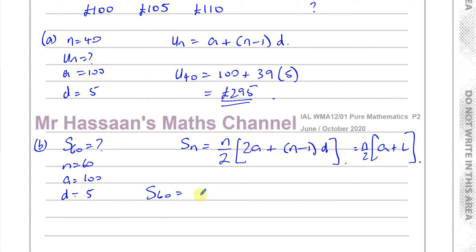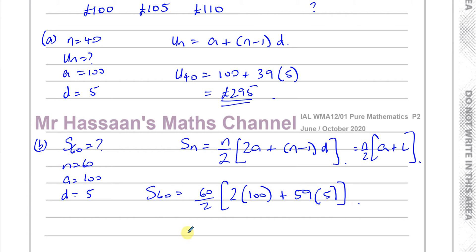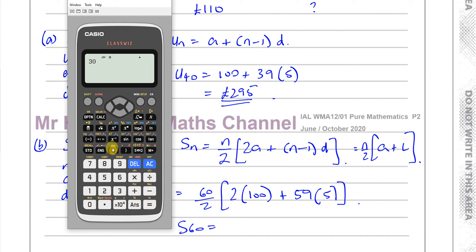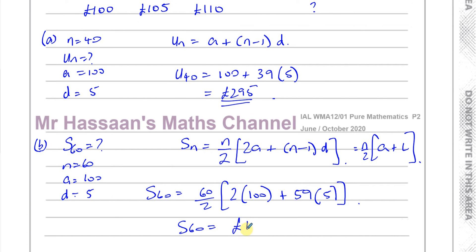The sum of the first 60 terms is N over 2, so it's 60 over 2, which is 30, times 2 times 100 plus N minus 1, which is 59, times D, which is 5. So we have 30 times 200 plus 59 times 5, and that gives us 14,850 pounds. So 14,850 pounds is the answer for part B.